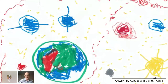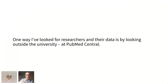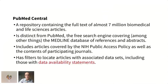As a data librarian I'm trying to find needles in very large haystacks. One way I've tried to answer those questions is by looking beyond Stanford — at PubMed Central. Stanford has lots of publication-related information, but information about research data is more ambiguous; it's scattered across multiple databases in a way that's hard to bring together. PubMed Central is a repository containing about seven million full-text research articles from biomedical and life sciences.